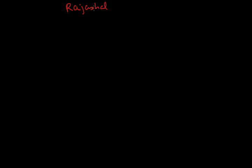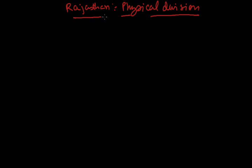Hello students, let us start the second module of Rajasthan's physical divisions. In the first module we covered the western arid region and the semi-arid region of Rajasthan, so let us continue the process.